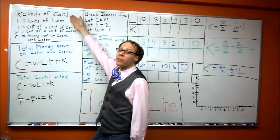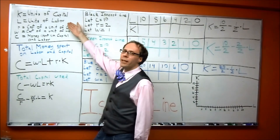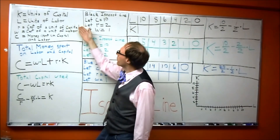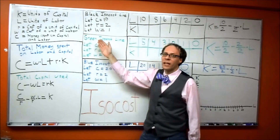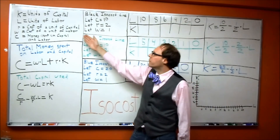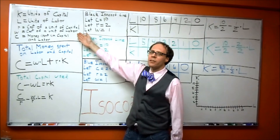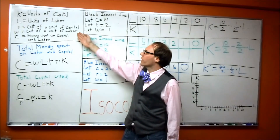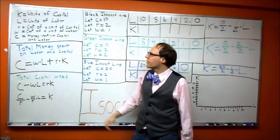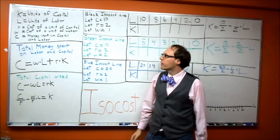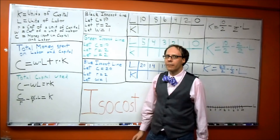The big K stands for units of capital. The big L stands for units of labor. The little R stands for the cost of a unit of capital. The little W stands for the cost of a unit of labor. C equals the money spent on capital and labor.